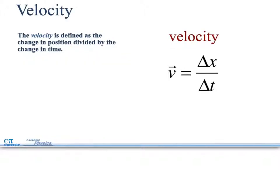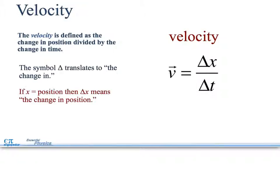So the velocity is defined as the change in position divided by the change in time. That's why the triangles here, those mean change. The triangle symbol will translate to the change in the x position. Delta x means the change in position.